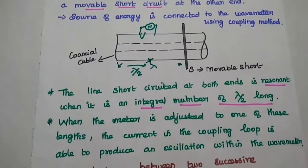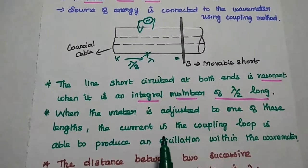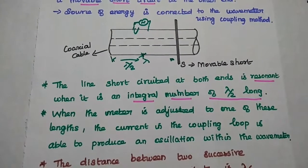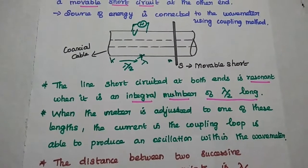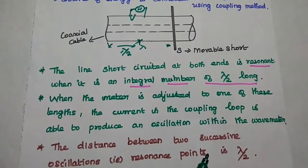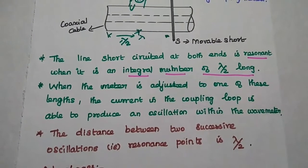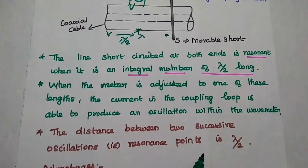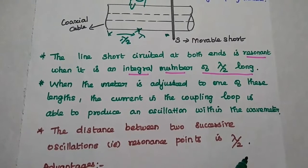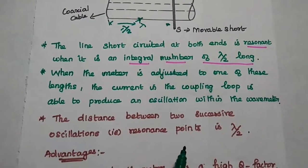Here the meter is adjusted to one of these lengths. Then the current in the coupling loop is able to produce an oscillation within the wave meter, which is the maximum voltage. The distance between two successive oscillations, the resonant point, is always lambda by 2.